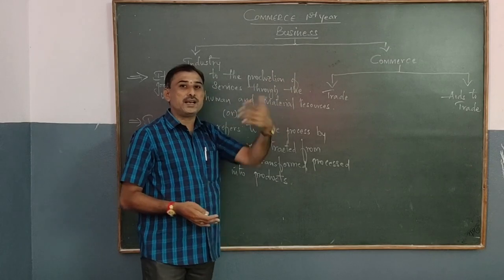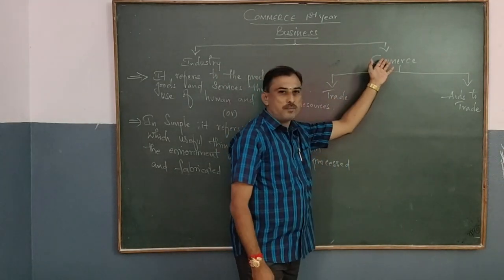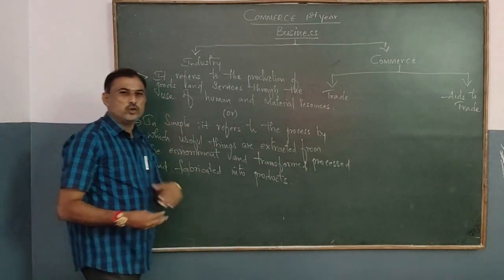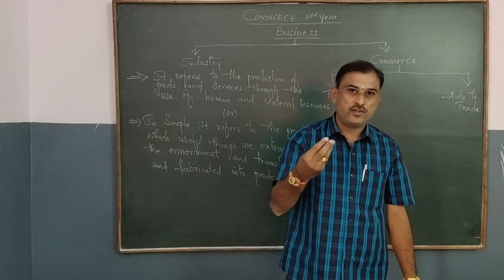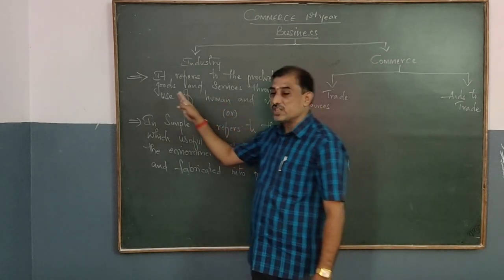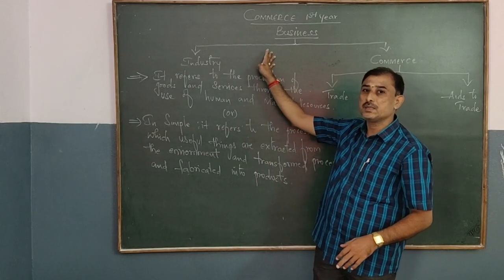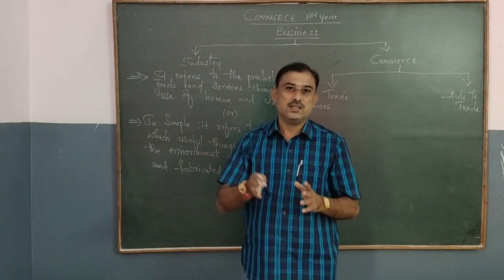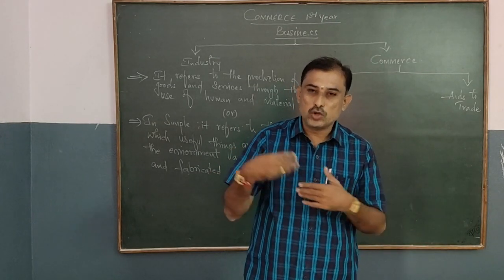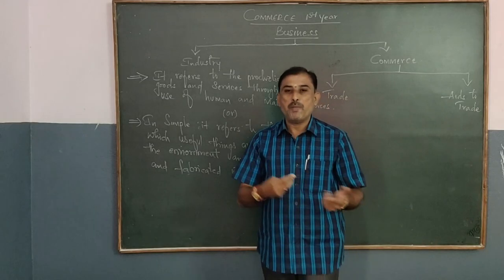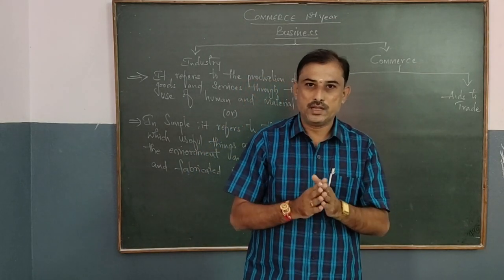Now the next topic we are going to discuss is business, which is further classified into two parts — one is called industry and another one is called commerce. Industry means, as you all very well know, it involves converting raw material into finished goods by using human skills, resources, machines, and manpower. This is the normal idea you will have in your mind about industry.